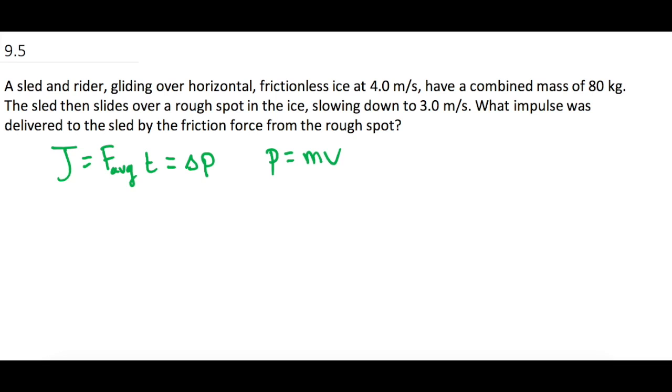The question gives us some information, so let's write that down. We know the mass of the sled and rider together is 80 kilograms. The initial velocity is 4 meters per second, and the final velocity is 3 meters per second.